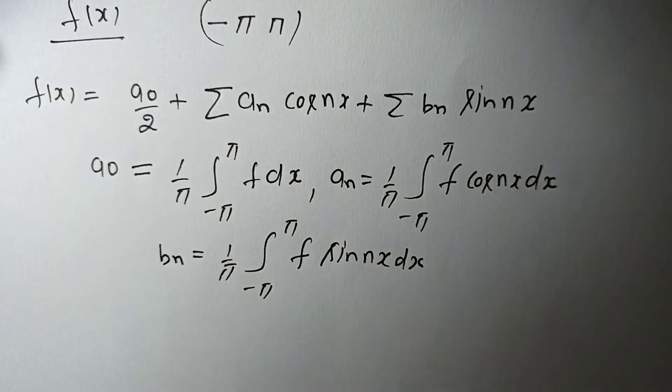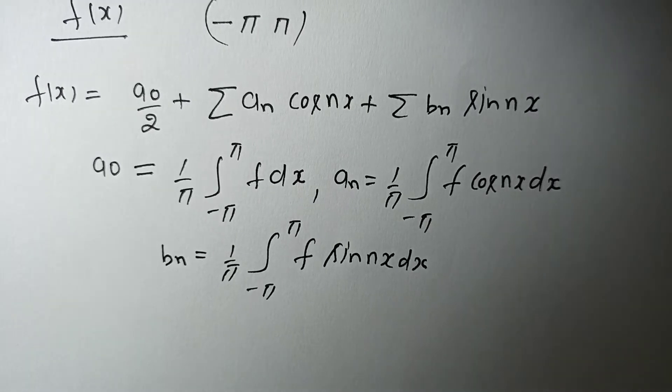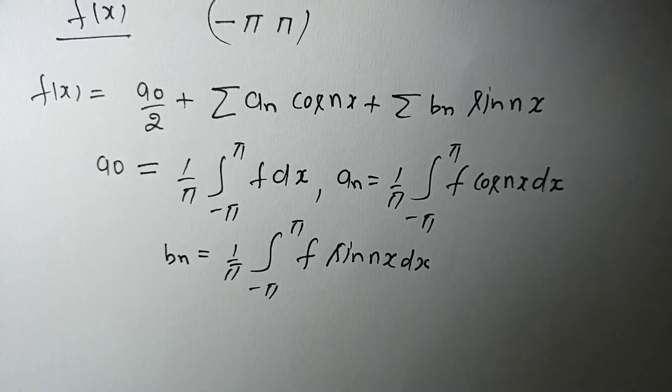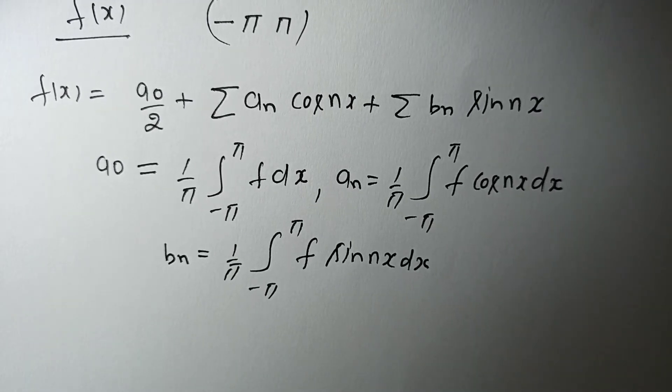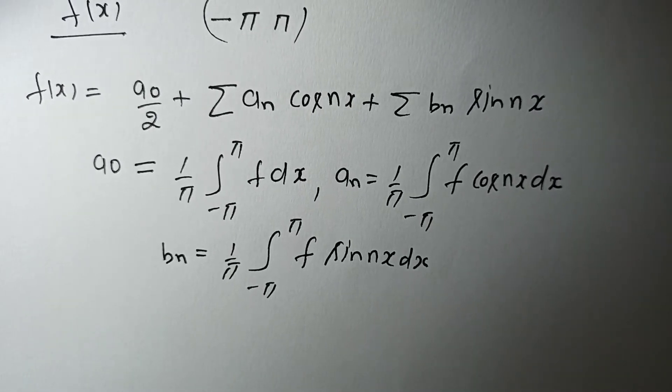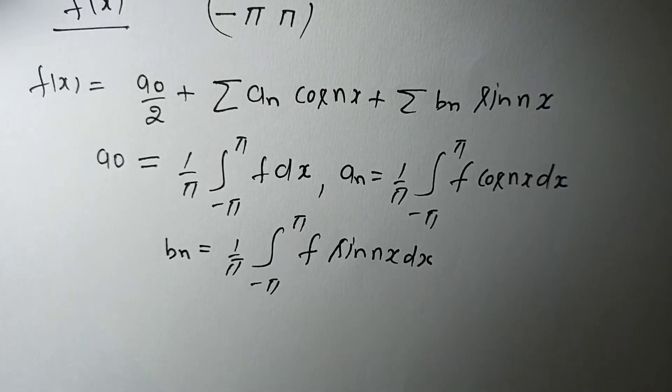So a₀, aₙ, and bₙ are called the Fourier coefficients and are given by the Euler formula.